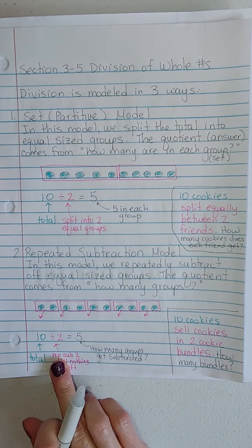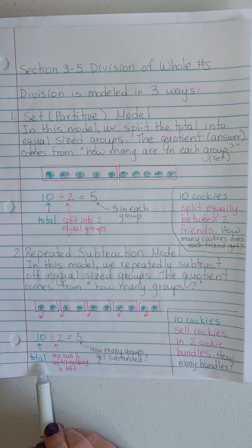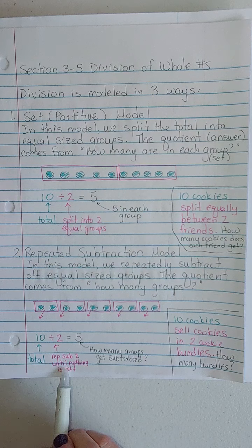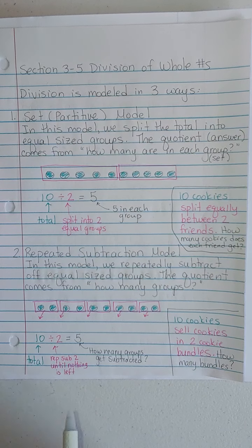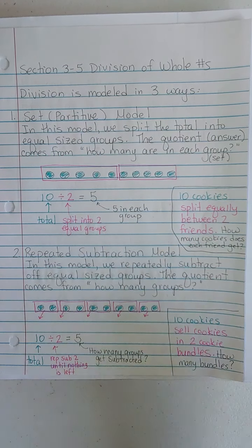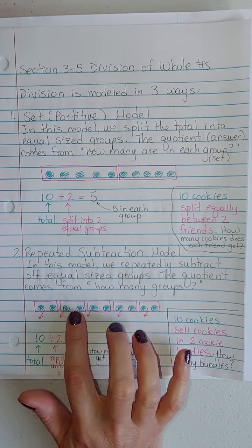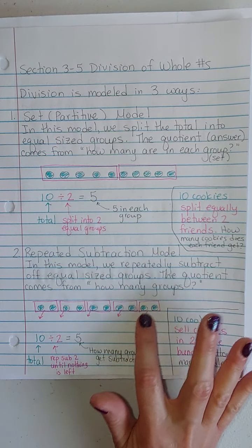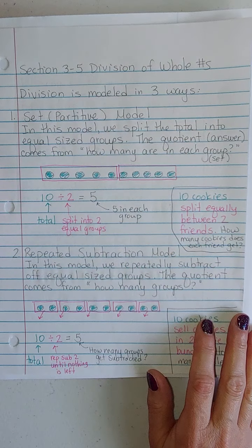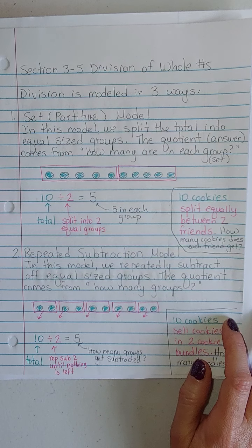Doing 10 divided by 2 again to show you the difference with the same problem, we get 10 total, and we repeatedly subtract 2 until nothing is left. My quotient is how many times did I have to repeatedly subtract that. Here's my total of 10, and I'm taking away 2 at a time. I have to do that 5 times until nothing is left.